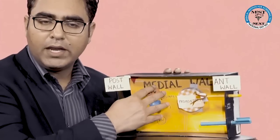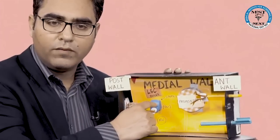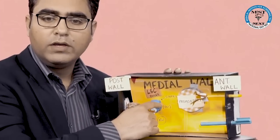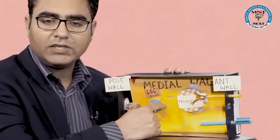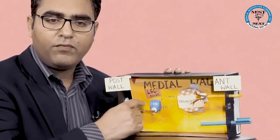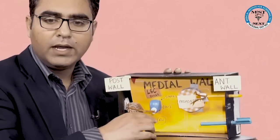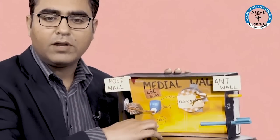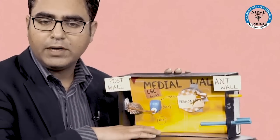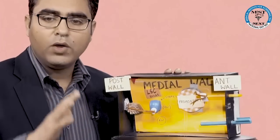Lastly, the medial wall of the middle ear also has two windows: the oval window and the round window. This blue knob-like thing represents the stapes, and we know the stapes footplate is attached at the oval window of the cochlea, which is on the medial wall of the middle ear. The other window on the medial wall is the round window, represented by RW, which is covered by a membrane called the round window membrane.